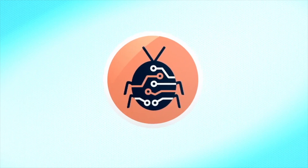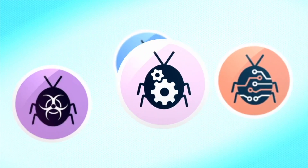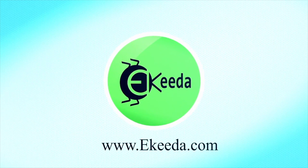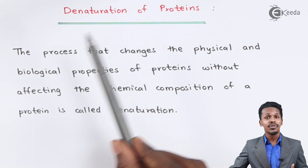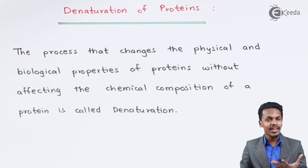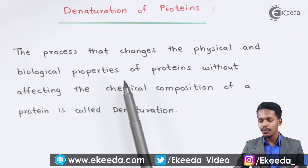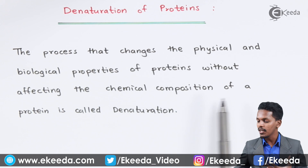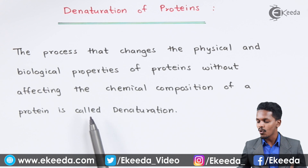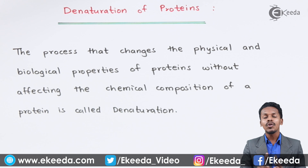We are going to talk about the denaturation of protein. The definition is: the process that changes the physical and biological properties of a protein without affecting the chemical composition of the protein is called denaturation of protein.